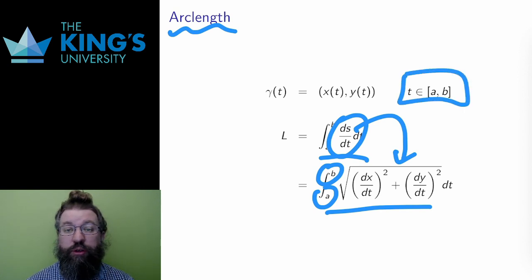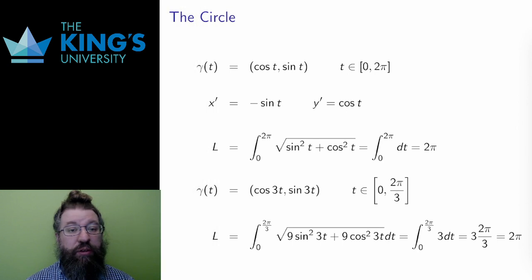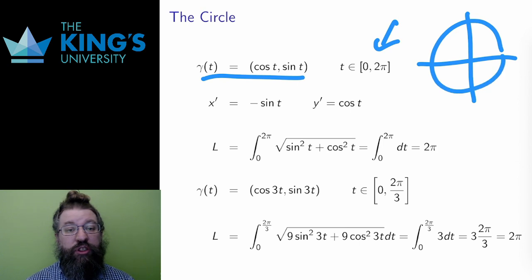So let me start with a familiar circle. Here is the parametric description of the circle. I'll do one revolution, so t from 0 to 2π. Then I differentiate the two coordinates in t. I square them and take the square root.